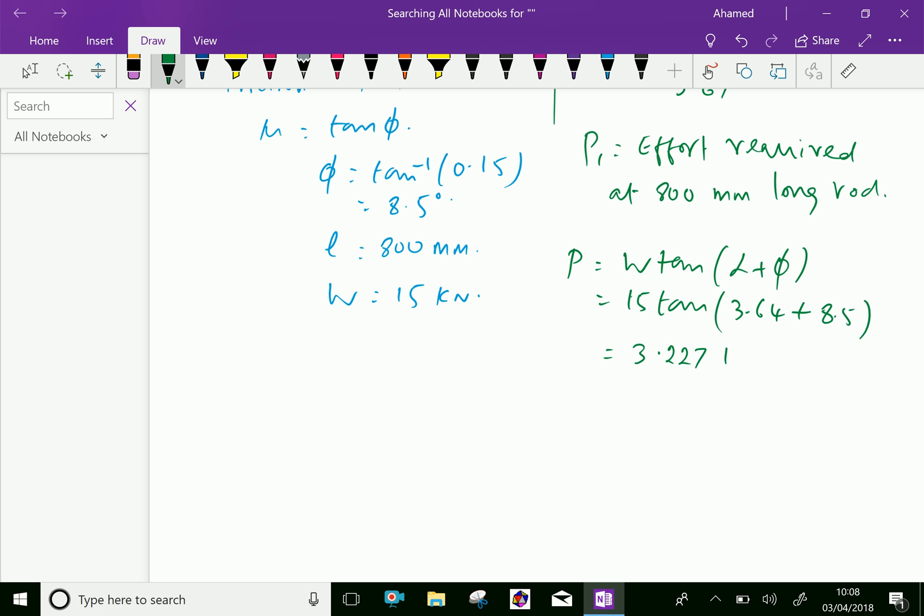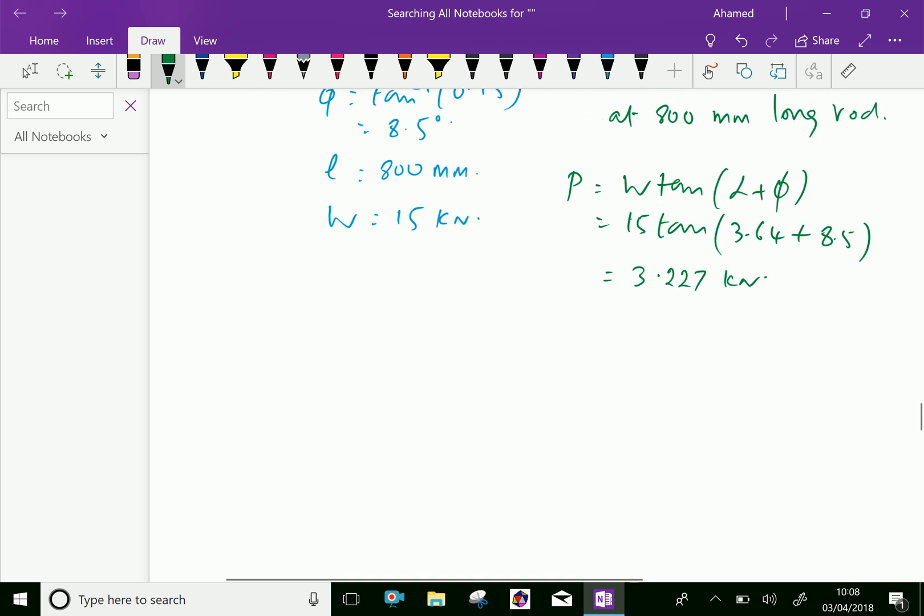Now we have the relation by taking moments: P1 into length of handle rod equals P into radius of the screw.